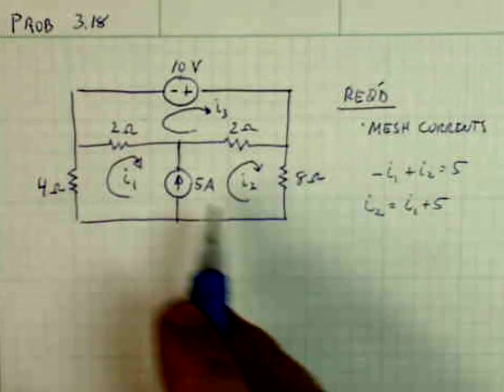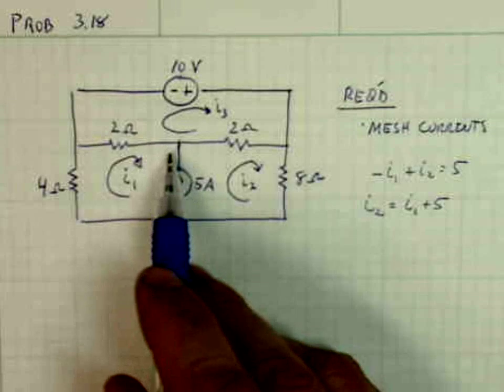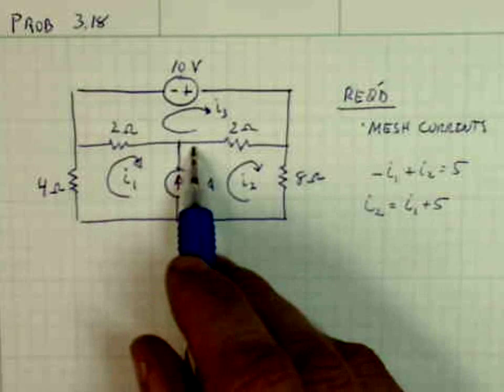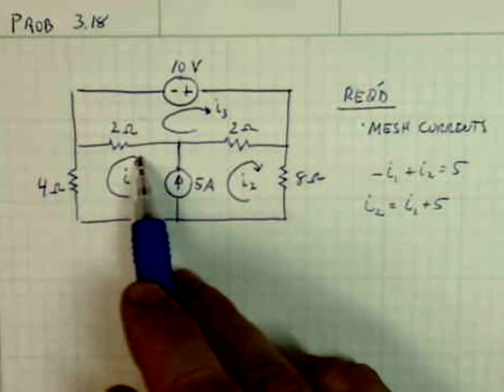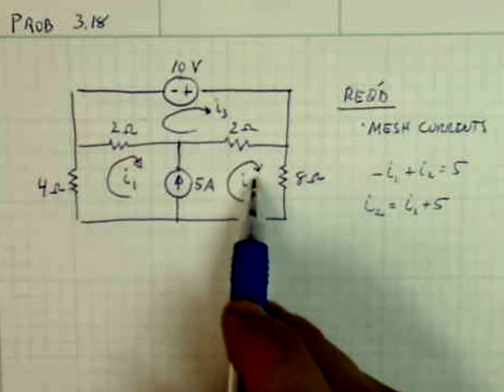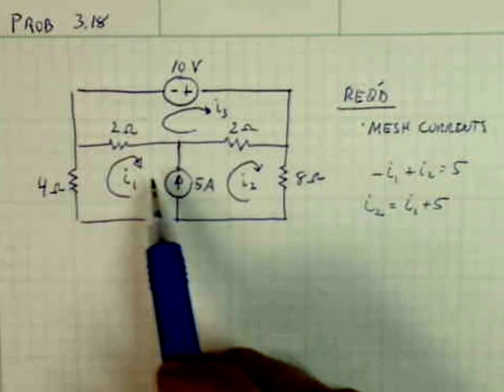Or if you want to think about what's going on at this node, I1 is coming in, 5 amps is going in, so I1 plus 5 amps is equal to I2, at least in terms of these two meshes.